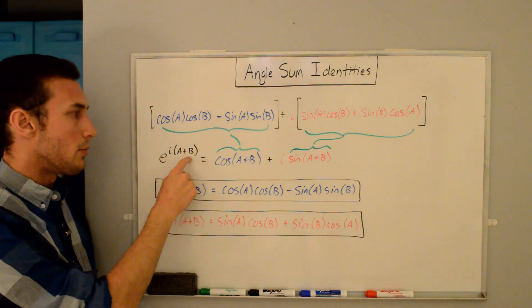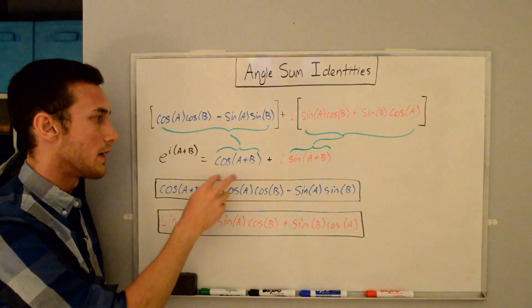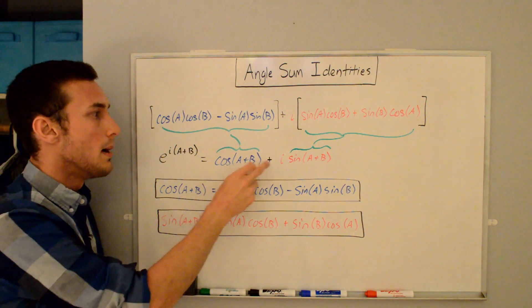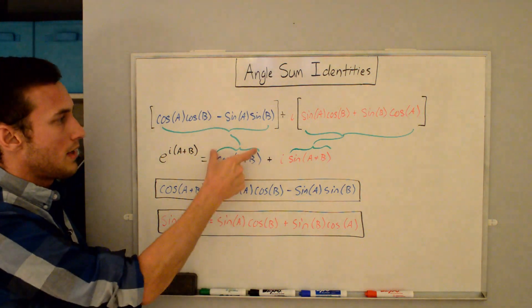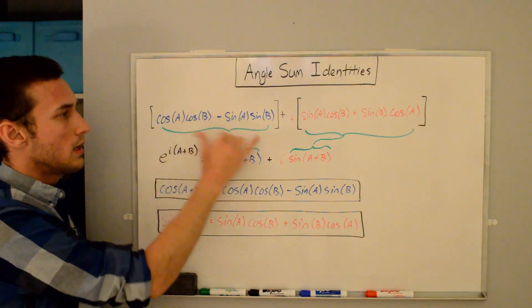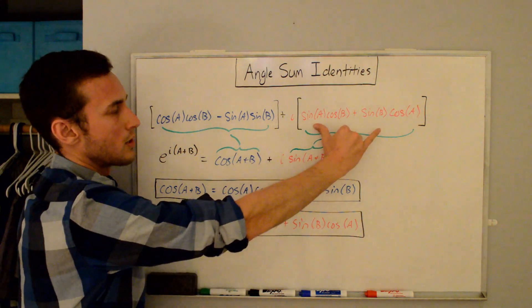And if you go back to what we originally wrote, this e^(i(A+B)), and we wrote it out using Euler's formula again, saying cos(A+B) + i·sin(A+B). If we look at this term here, that's equal to this real part, it's equal to this real part. And this imaginary part is equal to this imaginary part.